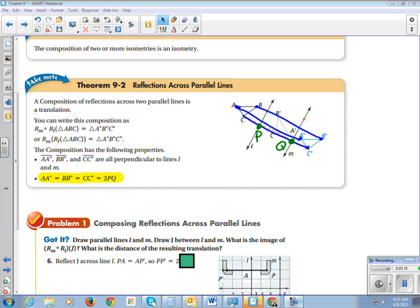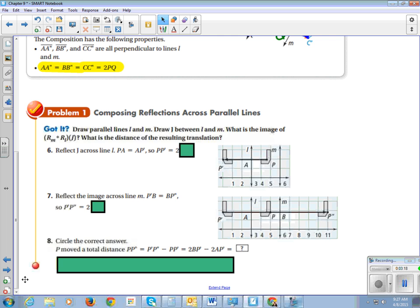So we're going to put a P right here and a Q right here. All right, so in problem one, we look at, we have parallel lines L and M. And we're going to draw a J between lines L and M. What is the image of a reflection around M combined with a reflection around L of point J? And then what is the distance of the resulting translation?